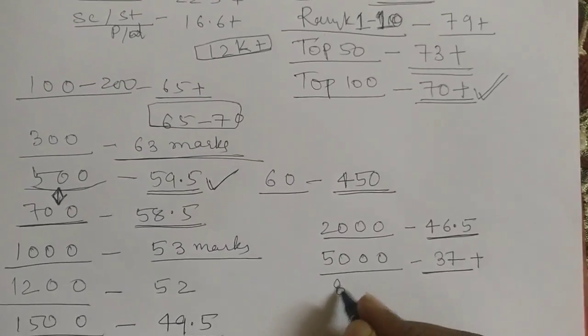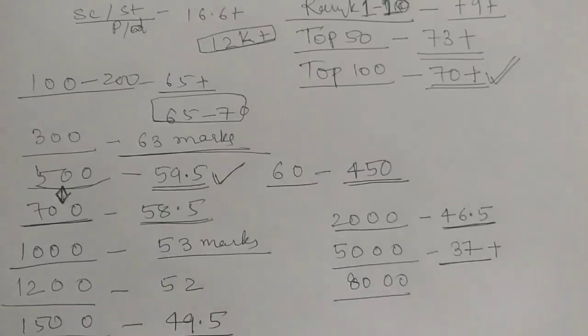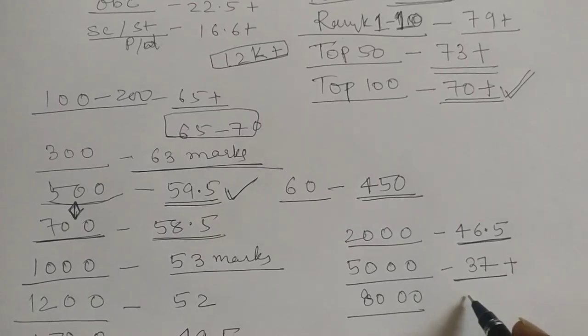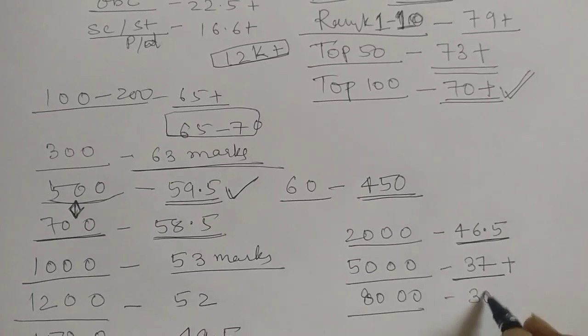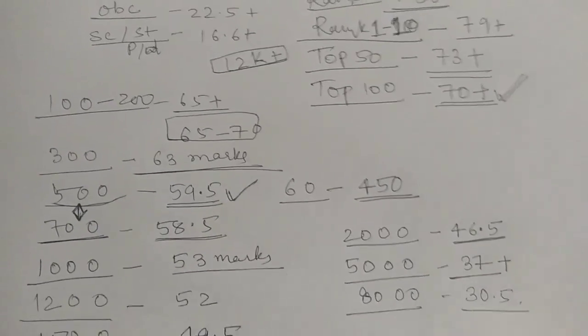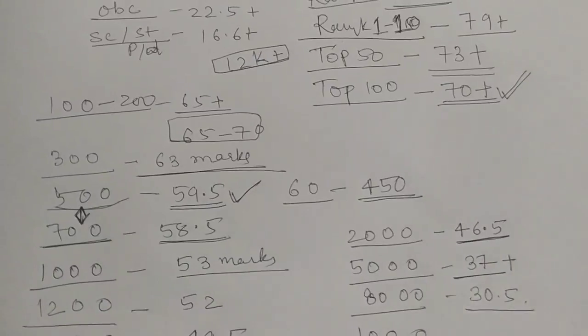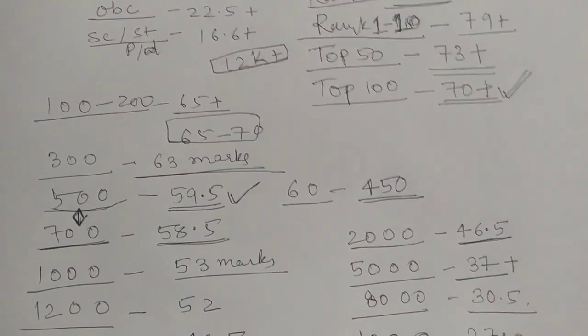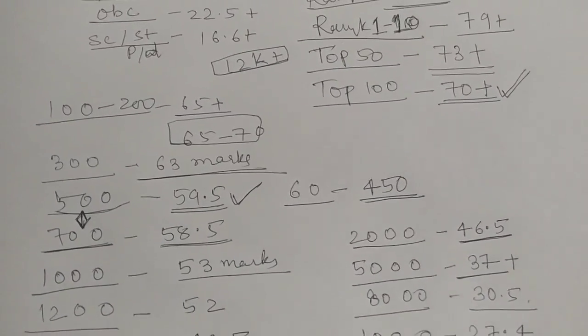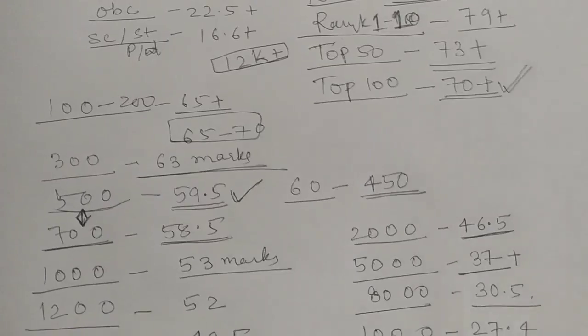Similarly, for 8000, the marks was 30.5. For 10,000, the marks was 27.5. And for 12,000, the marks was 25.